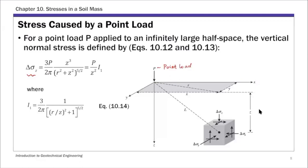A few things to highlight on this figure: Z is the depth of the point where you want to estimate the stress increase, and R is the horizontal distance from that point to the point load. The solution is expressed as P over Z squared times an influence factor I1. This I1 is a function of location — specifically R, the horizontal distance, and Z, the depth. So based on the Boussinesq solution, if you know the depth and horizontal location of the point, you can calculate the stress increase due to point load P.